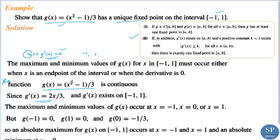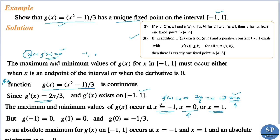We have g'(x) = 2x/3. Setting g'(x) = 0 gives 2x/3 = 0, which means x = 0. So the critical point is x = 0. Therefore, the maximum and minimum values occur at x = 0, x = -1, and x = 1, where -1 and 1 are the endpoints of the interval.